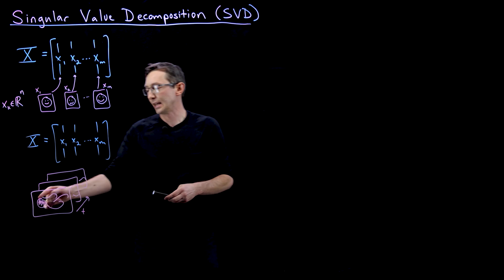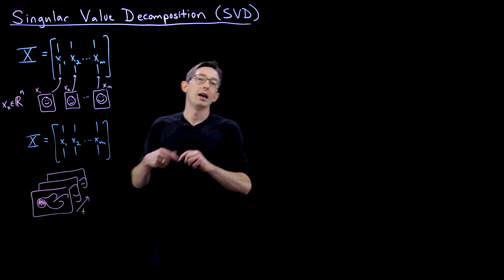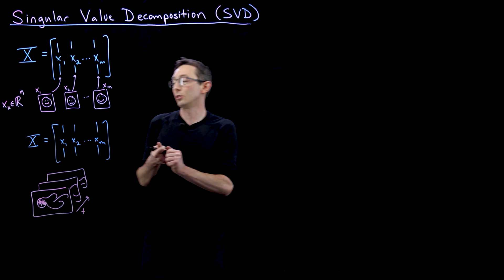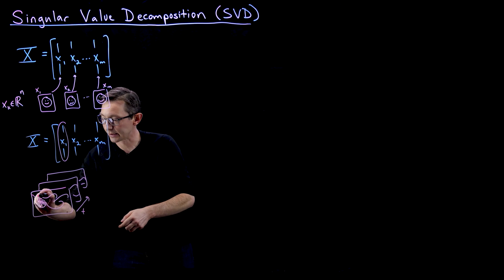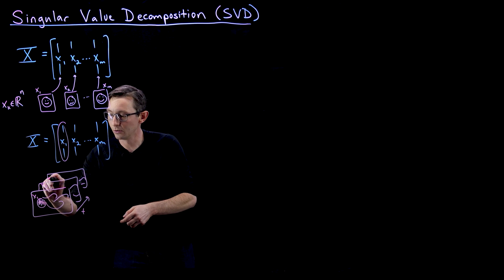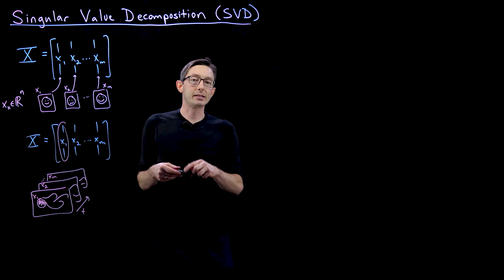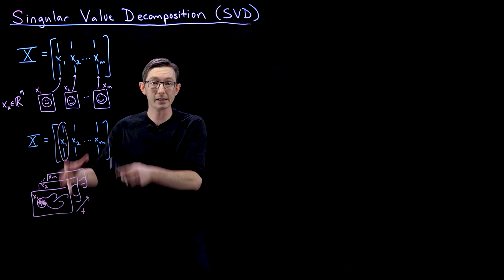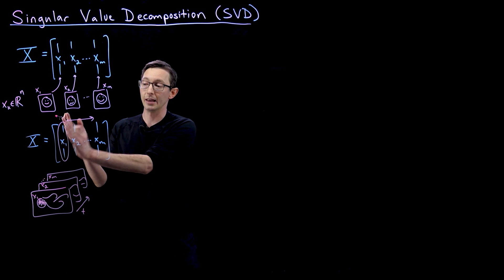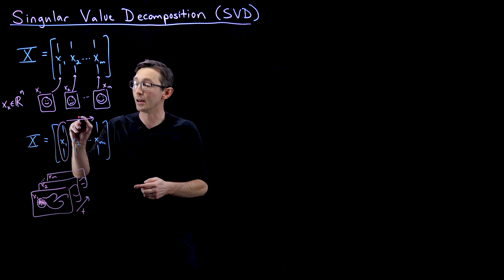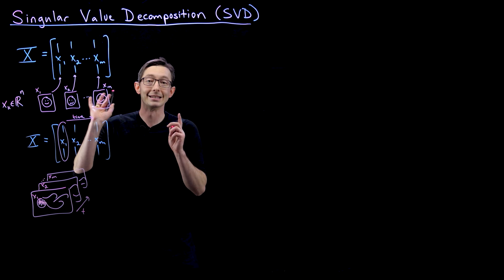And again, what I can do is I can take this first snapshot, and I can reshape that into a tall, skinny vector X1, the second snapshot in time. So this is X1, X2, dot dot dot, up to Xm. And so in this case of a physical system, now the columns have the additional interpretation that they are the state of the system as it evolves in time.